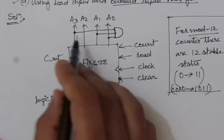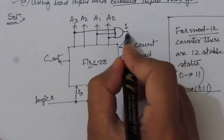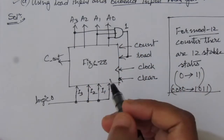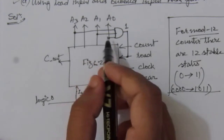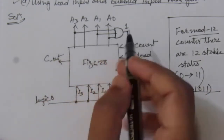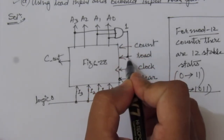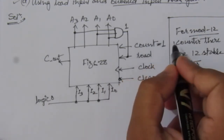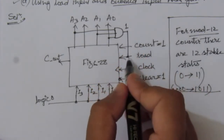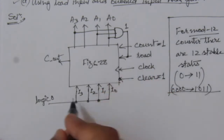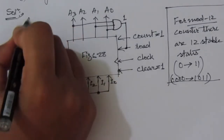Whenever we get 1011, we will get a 1 value at this AND gate output. This 1 should be connected to the load input. So this counter will count from 0000 up to 1011. Whenever we have 1011 — that is 11 — at this output, we will have the AND gate output equal to 1, and this is connected to the load input. Count is kept equal to 1 always, and clear is equal to 1 always so that it is not cleared. Whenever we have 1 here, load will be 1, and the register will be loaded with 0000 because we applied logic 0 to all inputs. This is the solution of part A.